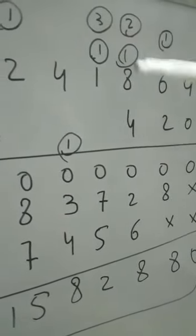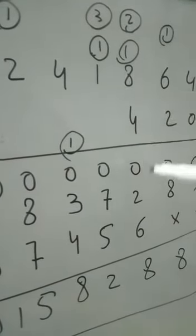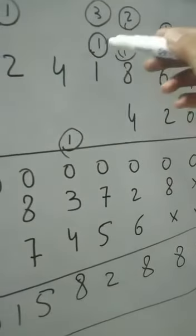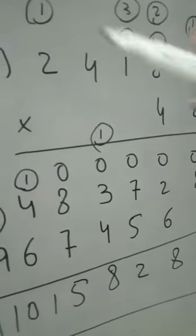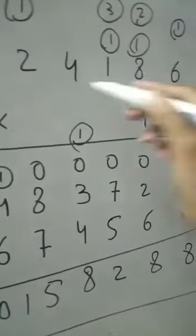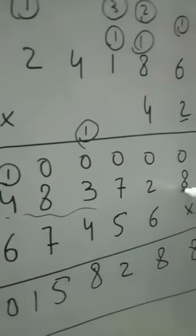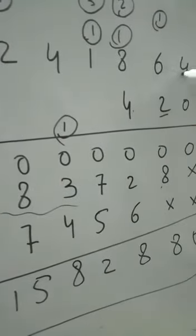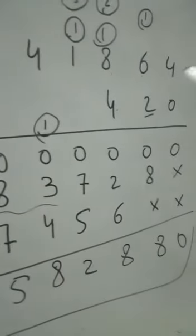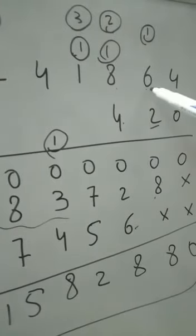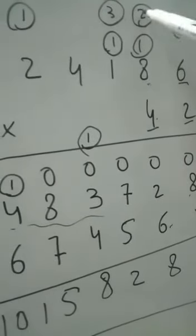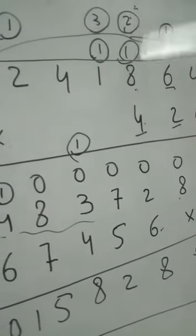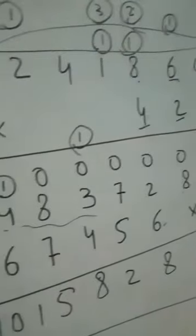Now we multiply by 2. 4 times 2 is 8, 6 times 2 is 12 with 1 carry, 8 times 2 is 16 plus 1 is 17 with 1 carry, 2 times 1 is 2 plus 1 is 3, 4 times 2 is 8. Now we multiply by 4. 4 times 4 is 16, 6 here and 1 carry. 4 times 6 is 24, plus 1 is 25.